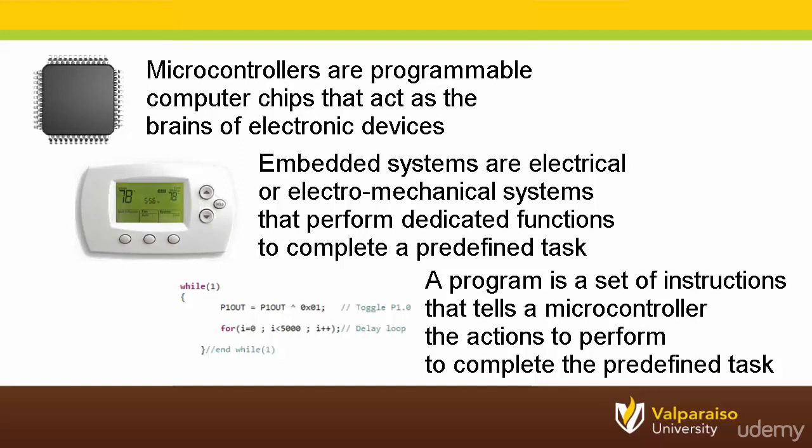What did we cover in this first section? We learned that microcontrollers are programmable integrated circuits, or computer chips, that act as the brains of electronic devices. Most of these electronic devices are categorized as embedded systems. Embedded systems, unlike general purpose desktop or notebook computers, are electrical or electromechanical systems that perform dedicated functions to complete a predefined task. The program is a set of instructions that tells the microcontroller what actions it needs to perform to complete the predefined task.